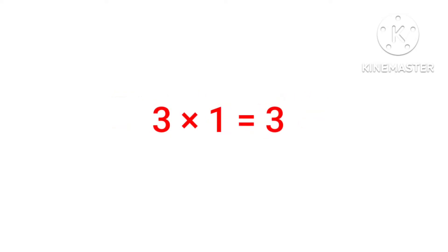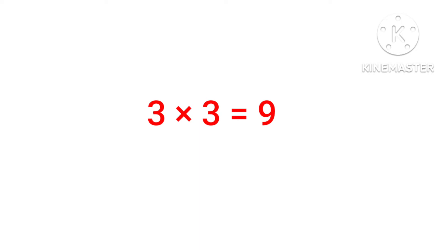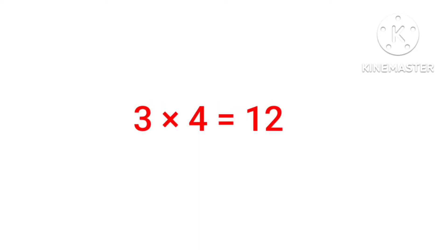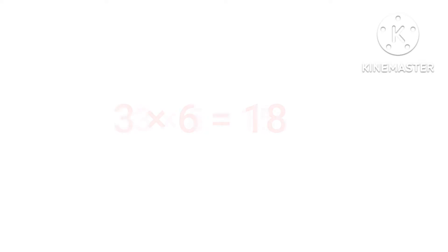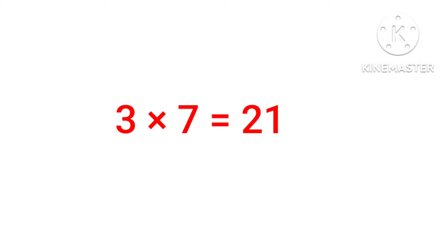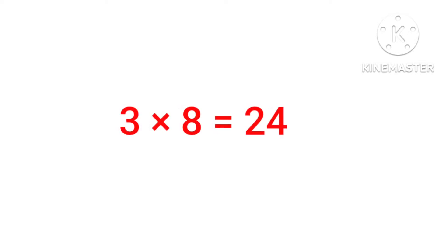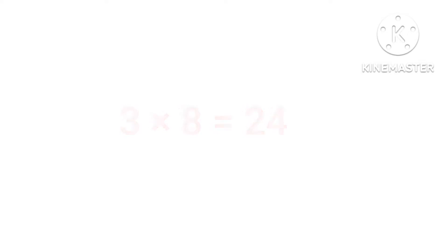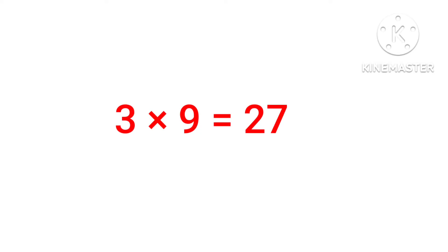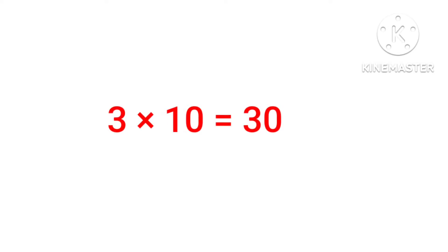Table of 3. 3 1's are 3, 3 2's are 6, 3 3's are 9, 3 4's are 12, 3 5's are 15, 3 6's are 18, 3 7's are 21, 3 8's are 24, 3 9's are 27, 3 10's are 30.